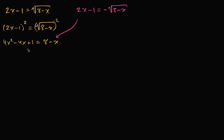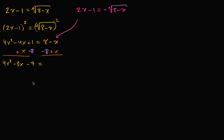Let's write this as a standard quadratic. Let's subtract eight from both sides and add x to both sides, and we get 4x squared minus 3x minus seven is equal to zero.